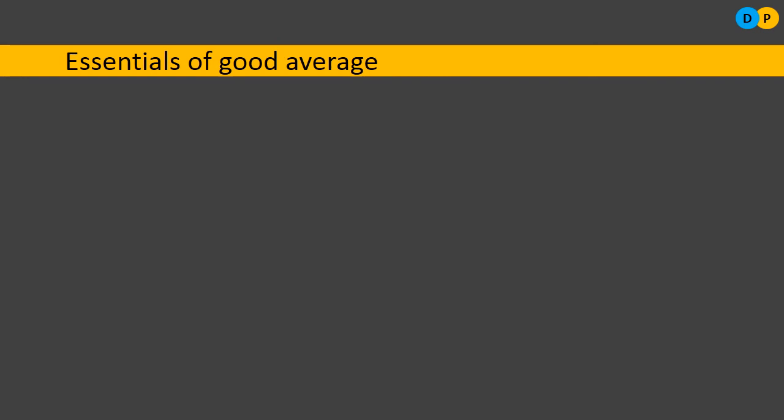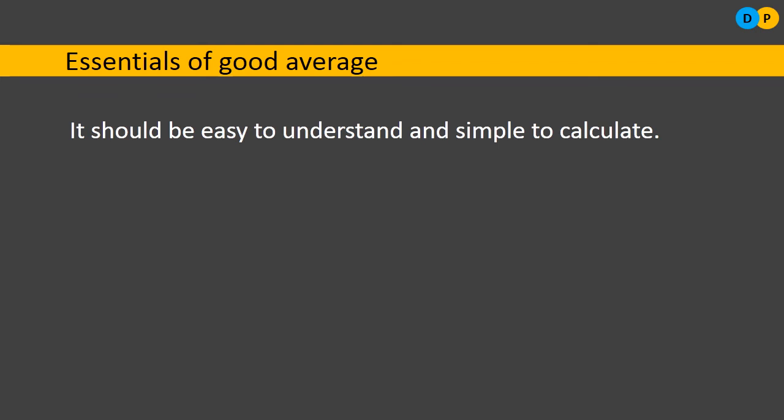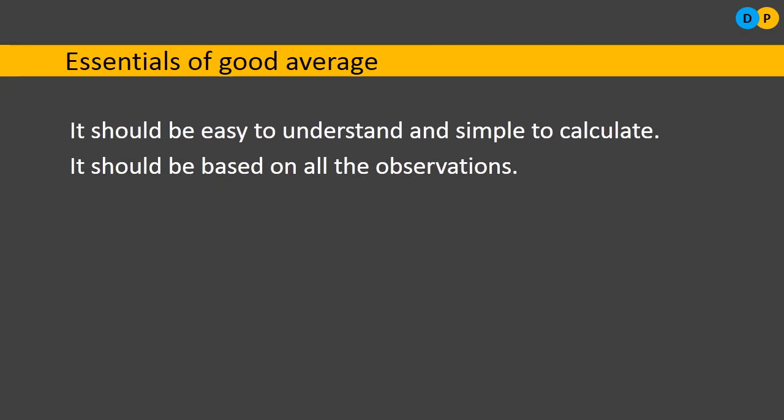To be a good average, there are certain essential requirements. First, it should be easy to understand and simple to calculate. Second, it should be based on all observations — for instance, to find the average marks of 50 students, we cannot leave out 20 students with low scores; we must consider all 50. Third, it should be well-defined by a mathematical formula. Fourth, it should not be affected by abnormal extreme values, such as open-ended classes like 'less than 10' or 'greater than 80.'